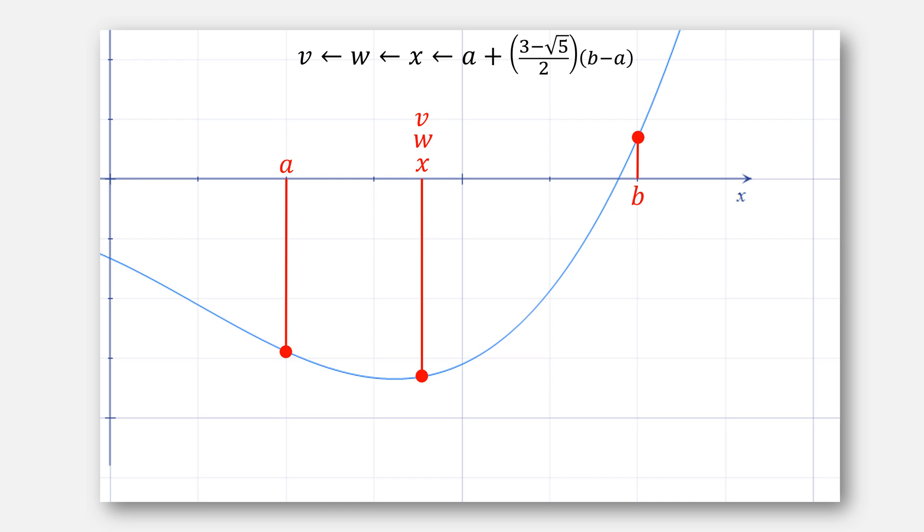We would then use their values for v, w, and x to try to do successive parabolic interpolation, which would fail because all of these points are the same. Therefore, we would switch to golden section search, and compute u right there, and update our variables.